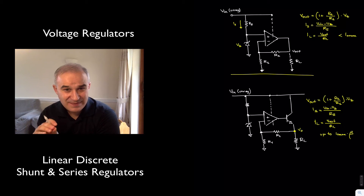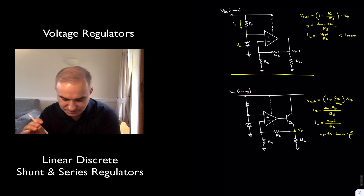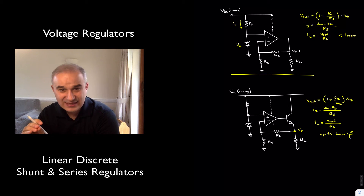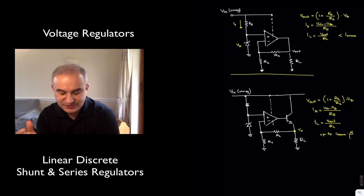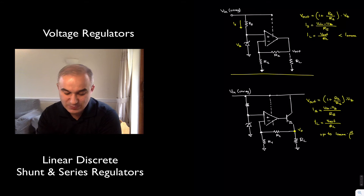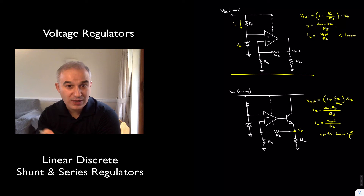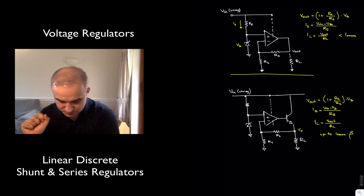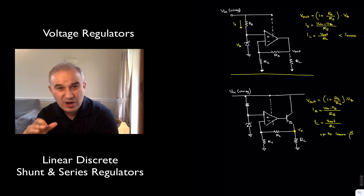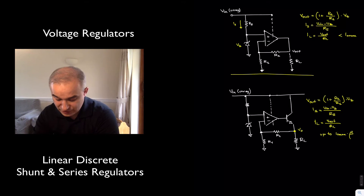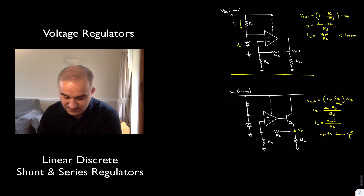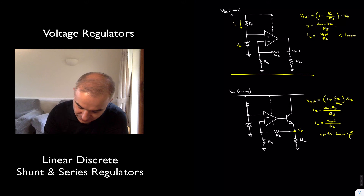The disadvantage of the previous circuit is that operational amplifiers — general-purpose operational amplifiers — have a maximum output current, which is generally quite low. How can we improve that? Well, we can use a transistor to amplify that current.